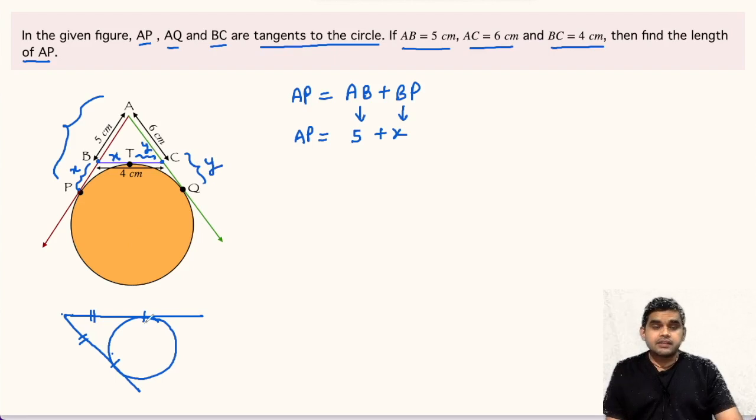Finally, let us apply this theorem taking A as the external point. From here we will get AP is equal to AQ. AP we just found is 5 plus X and AQ will be 6 plus Y.